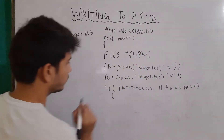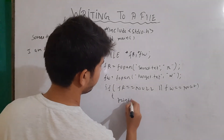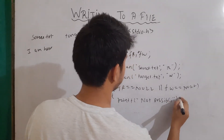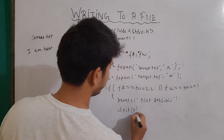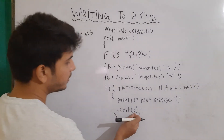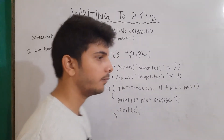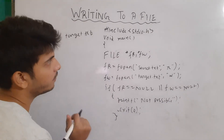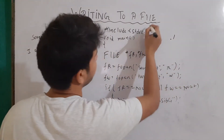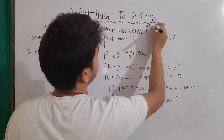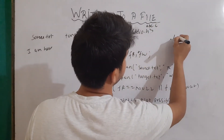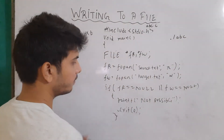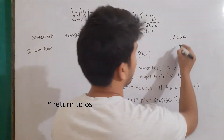So I write: if fr == null or fw == null, then I will print 'not possible' and exit the program with value 0 — to notify that the program has been terminated. Basically, when we run our program from the command line, let's say the name of our program is abc.c. Then in the command line we write ./abc after compilation, and this exit value will be returned after execution.